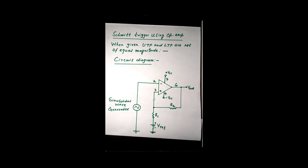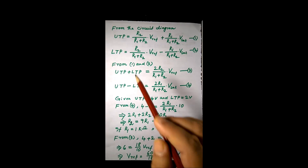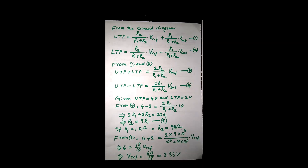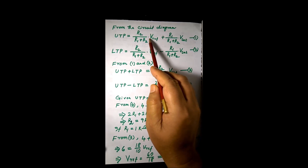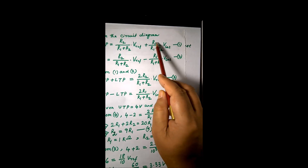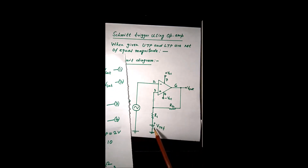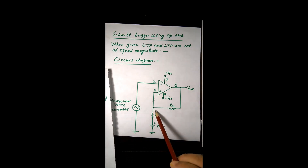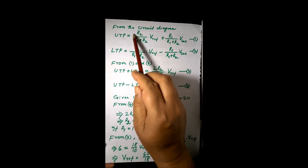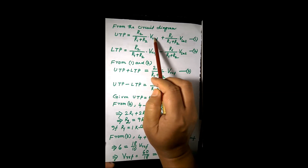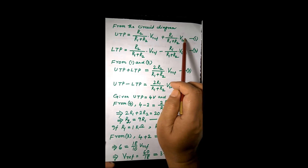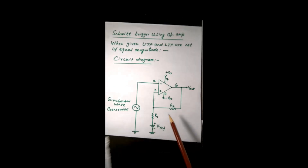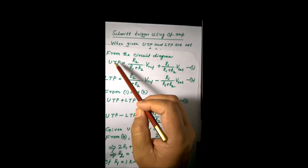We calculate each potential one at a time, grounding the other. The expression for UTP has a term R2 divided by (R1 plus R2) into V reference — that is the expression when V_sat is grounded. The other term is the expression when V reference is grounded. The potential at pin 3 is the summation of these two, and therefore UTP equals this combined expression.